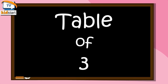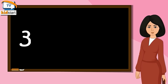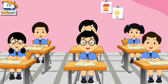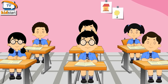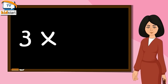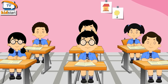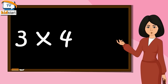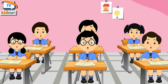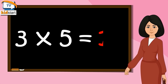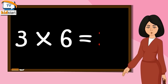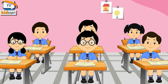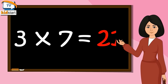Table of Three. Three Ones are Three. Three Twos are Six. Three Threes are Nine. Three Fours are Twelve. Three Fives are Fifteen. Three Sixes are Eighteen.